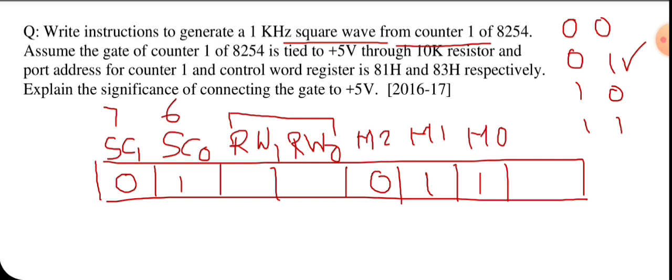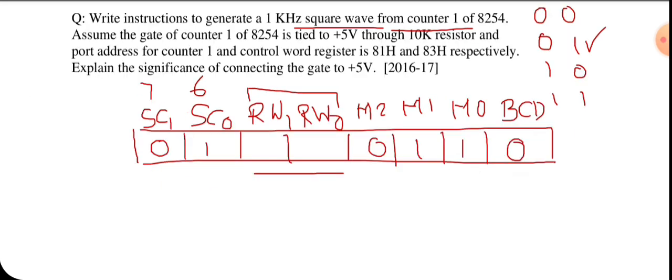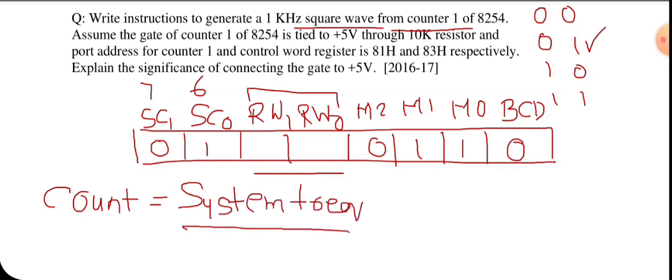Since nothing is mentioned about BCD, we use a binary counter, so the last bit is 0. Now let's calculate the count value. The simple formula for count is: count = system frequency divided by waveform frequency.